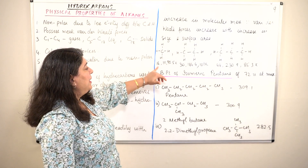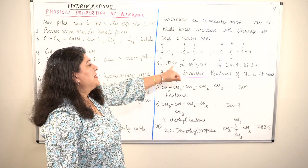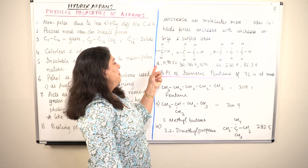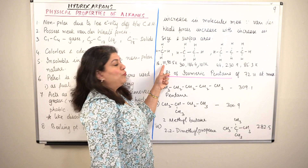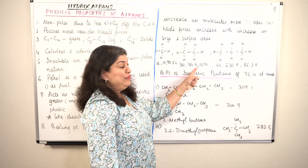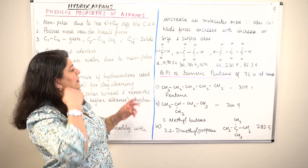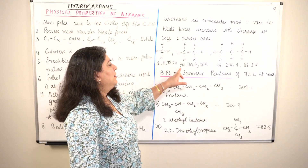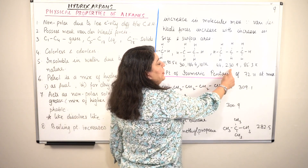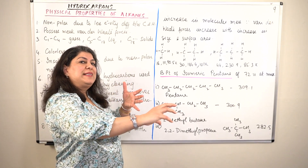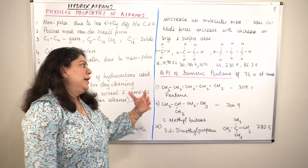For example, methane has a mass of 16 U with a boiling point of 111 K and melting point of 90.5 K. Ethane has mass 30 U with boiling point 184.4 K. Propane has mass 44 U with boiling point 230.9 K. So as the mass goes from 16 to 30 to 44, the boiling point rises from 111 to 184 to 230.9 K, showing a clear trend.